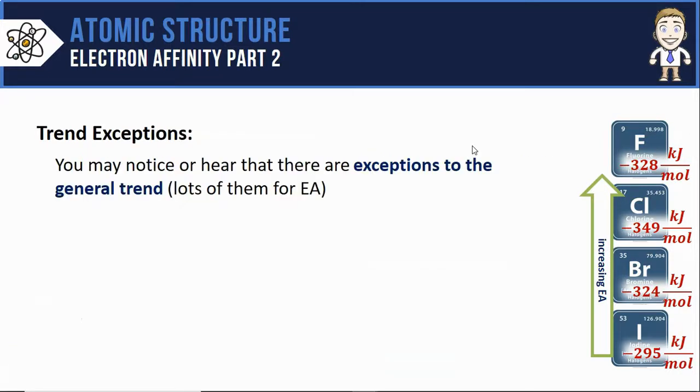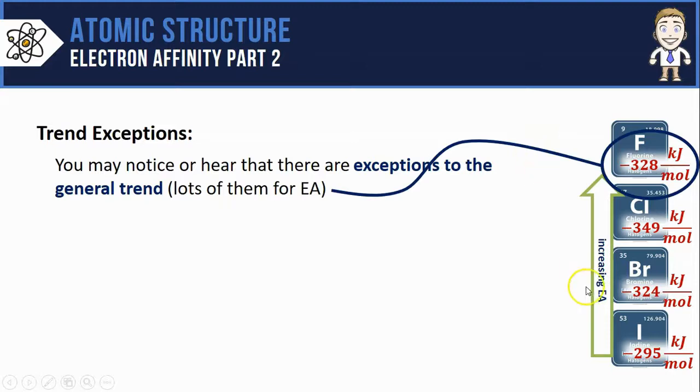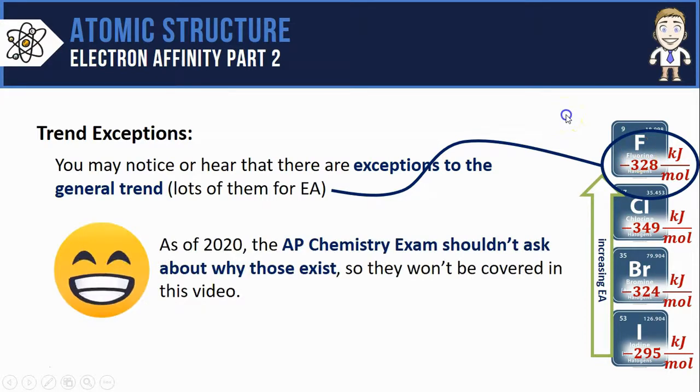Just like always in chemistry you may notice or hear that there are exceptions to this general trend and for electron affinity there's lots of them. We can see that here where there's an increase from iodine to bromine to chlorine but then a slight decrease down to fluorine's negative 328. The good news is that as of 2020 the AP chem exam shouldn't ask you why these differences exist so they won't be covered in this video.